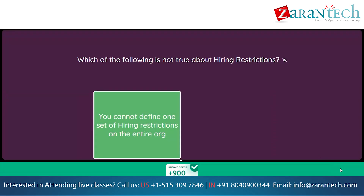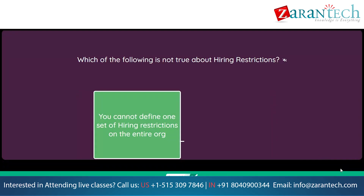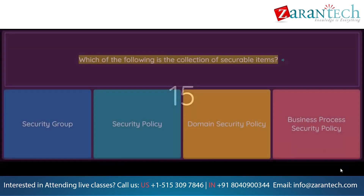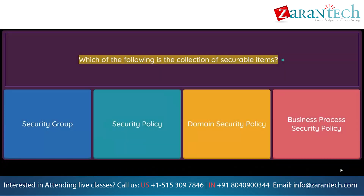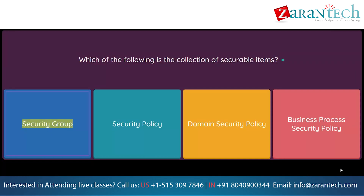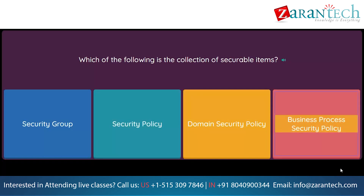Which of the following is the collection of securable items? Option 1: Security Group. Option 2: Security Policy. Option 3: Domain Security Policy. Option 4: Business Process Security Policy.